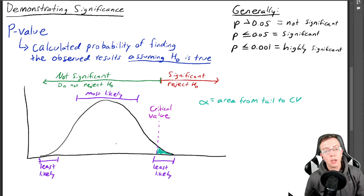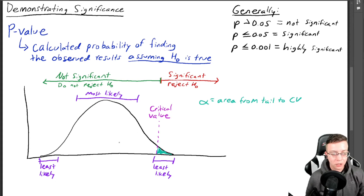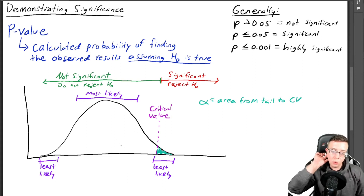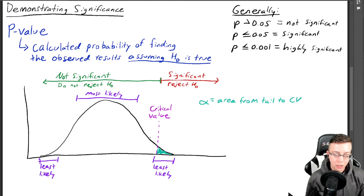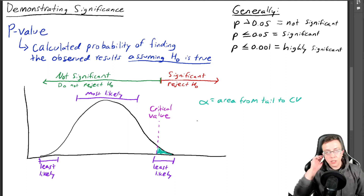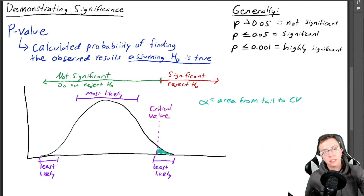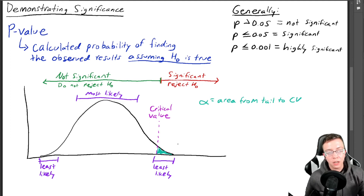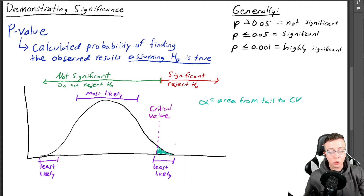This is assuming a one-tailed test, which I did intentionally because it's easier. For a two-tailed test, you would just divide the teal area in half and put some of it on the other side — but that's a conversation for a different time. The point is the area from the tail to the critical value where you have defined significance is what matters. That is where we are going to insert our test statistic — the data measured in our study.